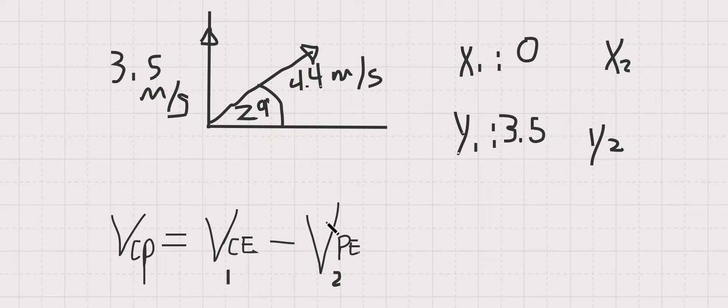In the y direction it's 3.5. The patrol boat is a little bit more difficult. You're going to have to use trigonometry to find this y component and this x component. So you're going to take the hypotenuse which is 4.4 times the cosine of 29 degrees. That's going to give you your x value.